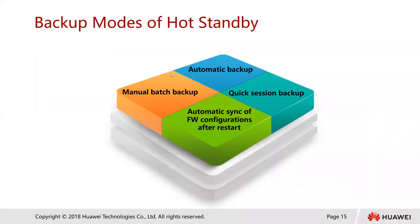There are different backup modes for hot standby. Automatic backup — by default it is enabled on firewalls to automatically back up configuration commands in real time and status information regularly. This backup method applies to various hot standby networks. After it is enabled, every time you execute a command that can be backed up on a firewall, the firewall immediately backs it up to the other firewall. The active device also periodically backs up status information to the standby device, around 10 seconds after its creation.